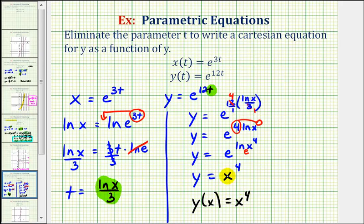But we do have to be careful because this function does have a restricted domain. Going back up to our parametric equation involving x and t, notice that x is equal to e raised to some power. Well, e raised to some power is always going to be greater than zero...